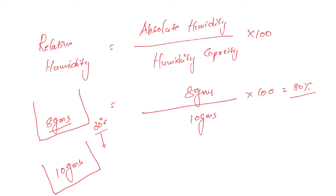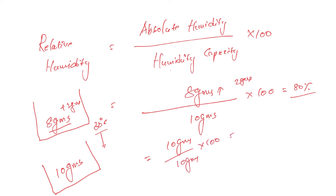So relative humidity is 80 percent. Now, one more example. The absolute humidity is 10 grams. Let's say a cloud or water body passes and we add 2 more grams of moisture. That means absolute humidity increases by 2 grams. The humidity capacity is 10 grams. So relative humidity becomes 100 percent.